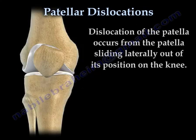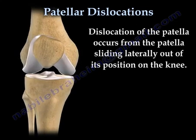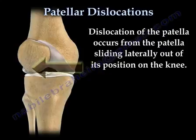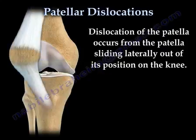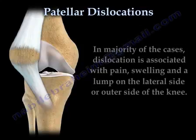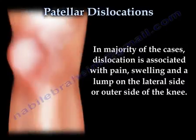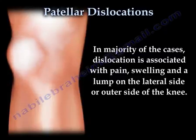Dislocation of the patella occurs from the patella sliding laterally out of its position on the knee. It may occur from a blow to the knee, acute trauma, or severe twisting of the knee. In the majority of cases, dislocation is associated with pain, swelling, and a lump on the lateral side — or the outer side — of the knee.